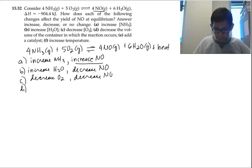Part D. Decrease the volume of the container in which the reaction occurs. When you decrease the volume, it shifts to the side that has the lesser moles. On the left side, you have 4 plus 5, 9 moles. On the right side, you have 4 plus 6, 10 moles. So you have lesser moles on the left side.